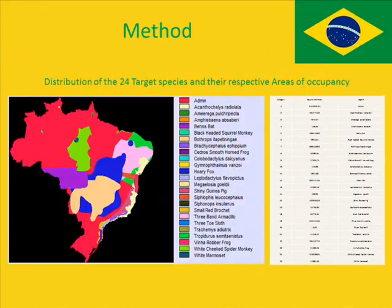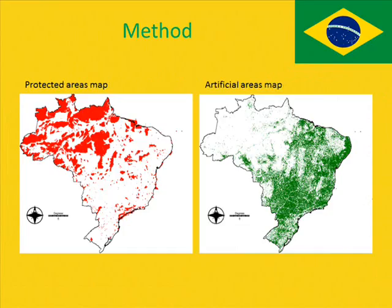As you can see on the distribution of species, we have compiled all 24 endemic species onto one shapefile to illustrate their areas of occupancy. Most of the 24 endemic species' area of occupancy is within central Brazil as well as on the east coastline, with very few of the species in north-western regions. Another map analysed was the protected areas.